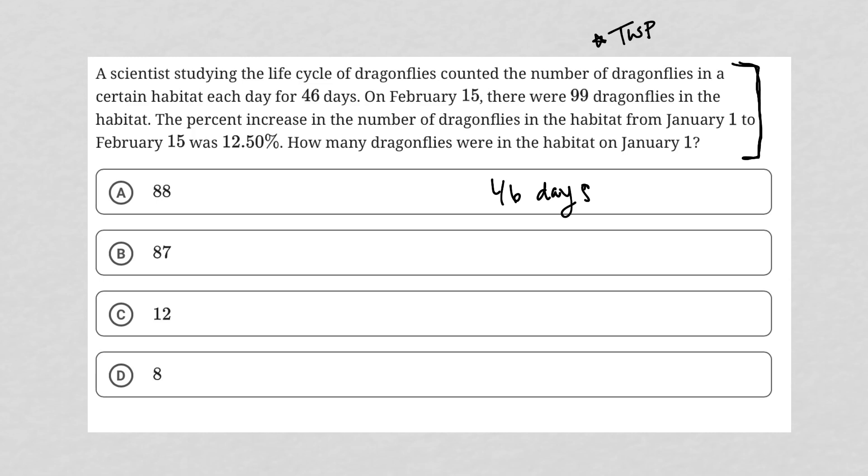Next sentence, on February 15th, so 2/15, there were 99 dragonflies in the habitat. All right. So 99 dragonflies. The percent increase in the number of dragonflies in the habitat from January 1st to February 15th, so from 1-1 to 2/15, the percent increase was 12.5%. Okay. So that means we're going to go up. That's how I represent increase. We're going to go up by 12.5%.